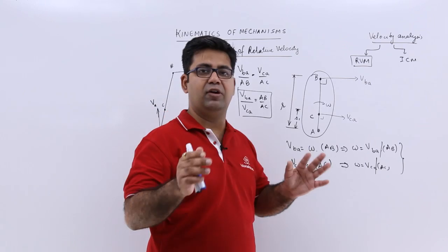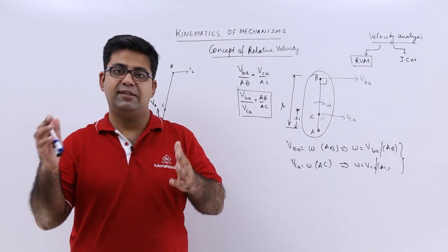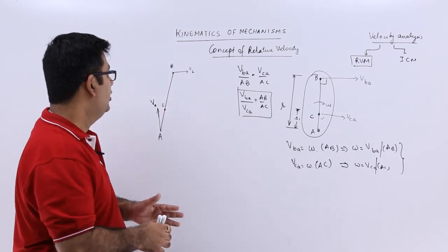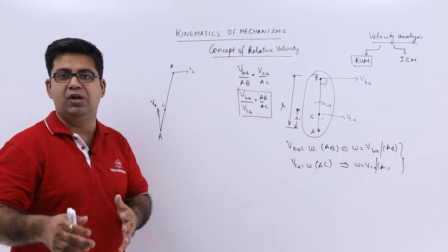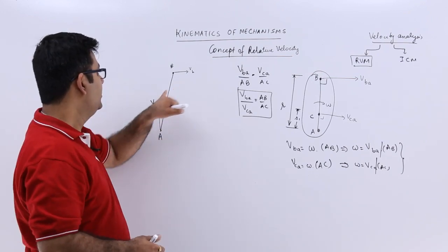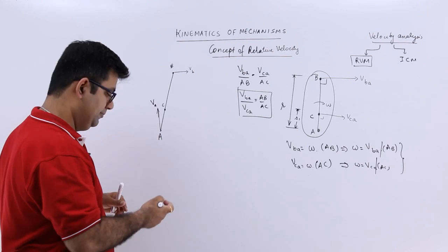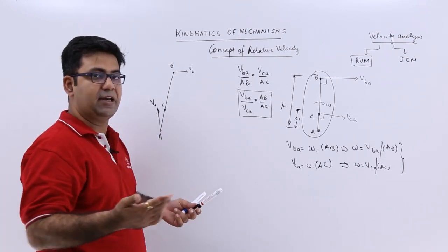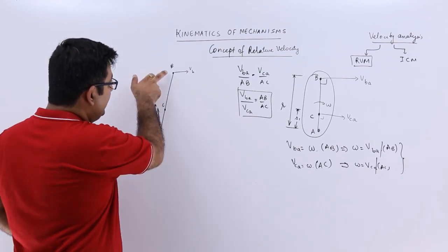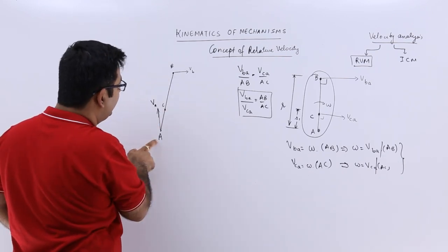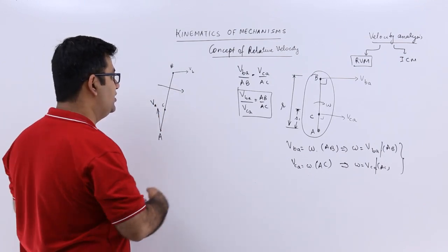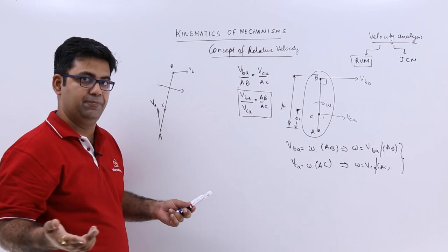Whenever you have a single velocity like VA, VB, or VC, it is with respect to a fixed point O, so we usually don't write VBO — we just write VB. Now we need to draw a velocity diagram. We know that the velocity of point B with respect to point A is perpendicular to the link, and VB itself is not perpendicular to link AB.